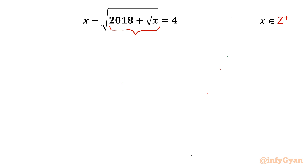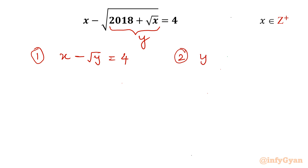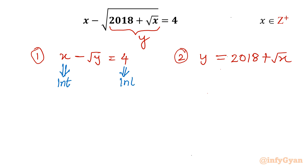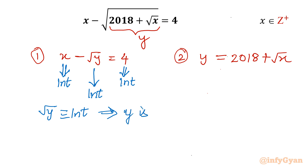This radicand term I will consider y. Now let me frame two equations. Equation 1, the original one: x minus √y = 4. And equation 2 using the substitution: y = 2018 + √x. Now a few conclusions — x is an integer, and the right-hand side 4 is obviously an integer, so y should be an integer, and therefore √y must also be an integer. So y must be an integer.